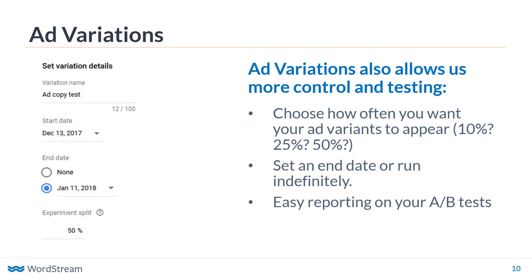A big pushback as Google automates ad rotation is that ads don't necessarily run in a 50/50 A/B split — Google serves the ad it thinks will perform better more frequently, and some people get uncomfortable with Google predetermining the winner. Using this tool, we have control over the split. If I want the ad variation to run 50/50, I can set that up. If I want a 33/33/33 split, I can do that. Or if I only want to test it on 10% of my traffic, Google will make that split on exactly 10% of my traffic.